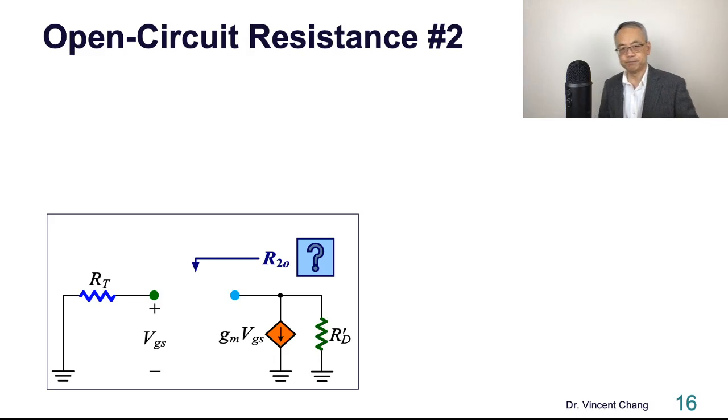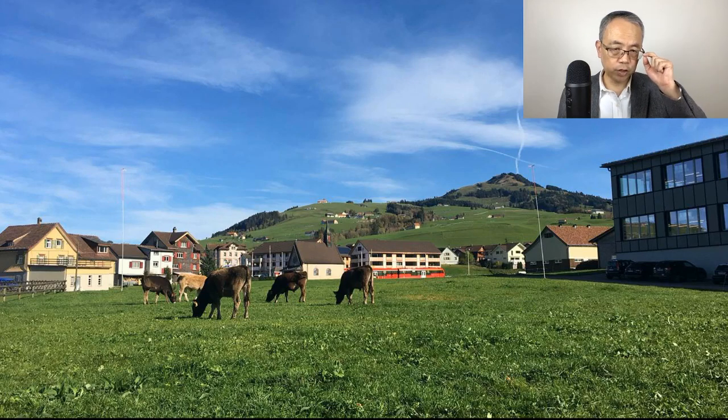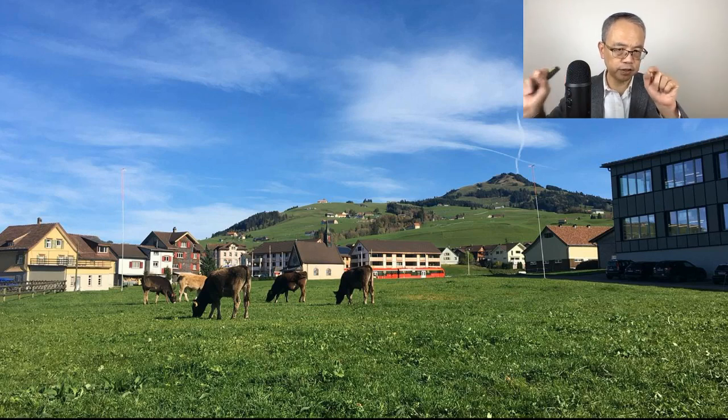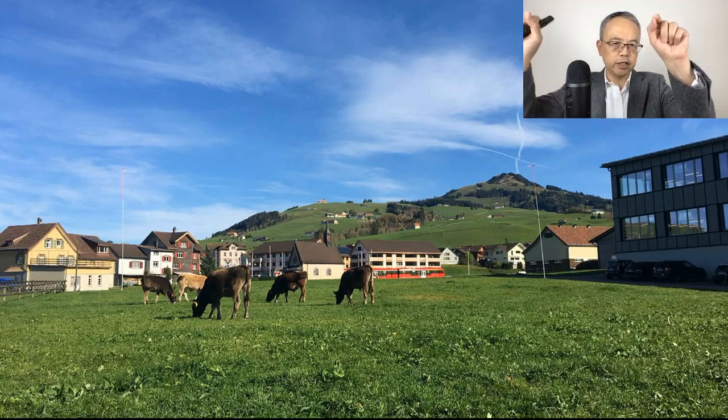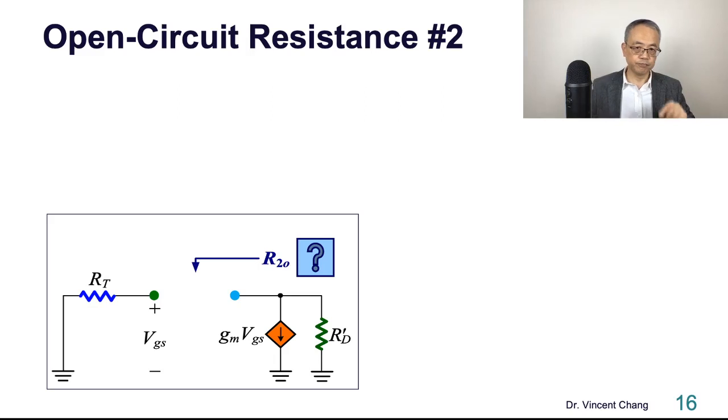So now I want to pause for three minutes. Try to solve the effective resistance seen by CGD, which is the R2O. So just take a screenshot and get a piece of paper, try to solve this. I'll come back in three minutes. Can you get this?